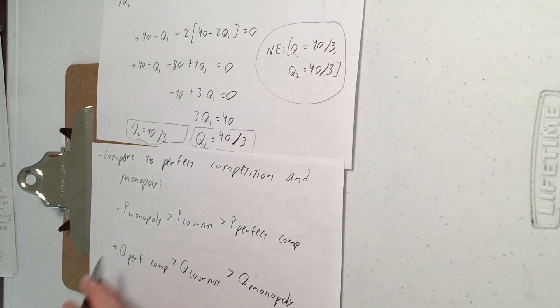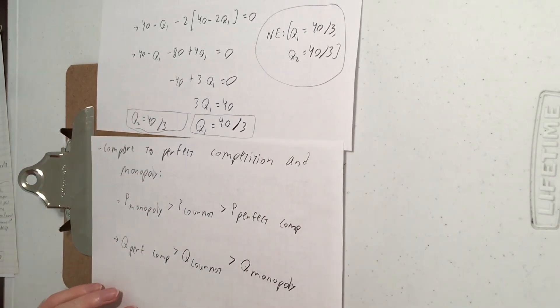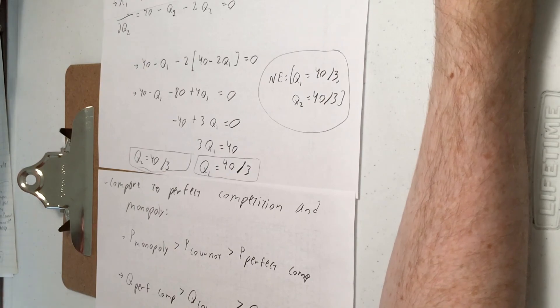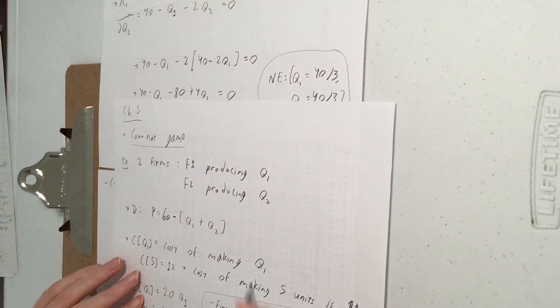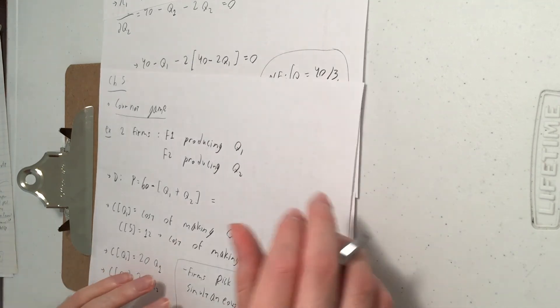So let's just verify our intuition by working through each of these cases. So I found the Cournot quantity, which is enough to find a Nash equilibrium. Nash equilibrium is about strategies and the strategy involves Q. Let's just find the Cournot price as well so you can make these comparisons. So our demand curve was back over here. P equals 60 minus Q. So let's just plug in our Q equals 40 over 3 for each.